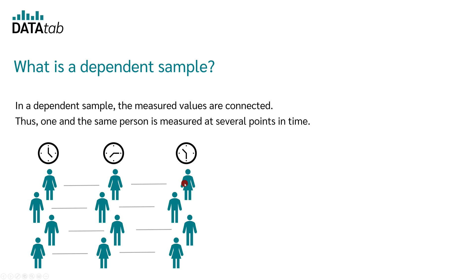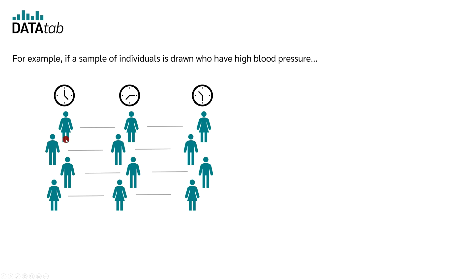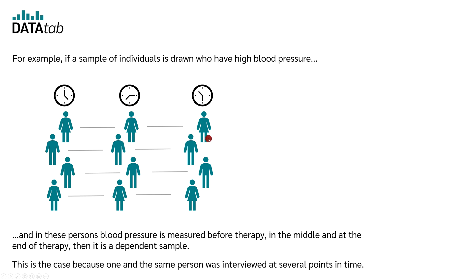In a dependent sample, one and the same person is measured at several points in time. For example, if a sample of people suffering from high blood pressure is drawn and the blood pressure of these people is measured before therapy, in the middle of therapy, and at the end of therapy, then this is a dependent sample, because one and the same person was measured at several points in time.